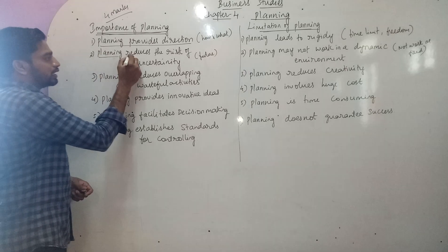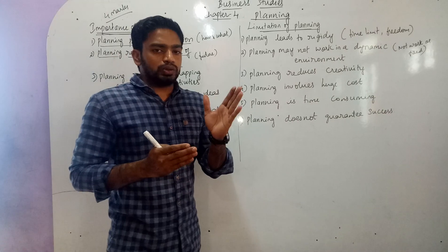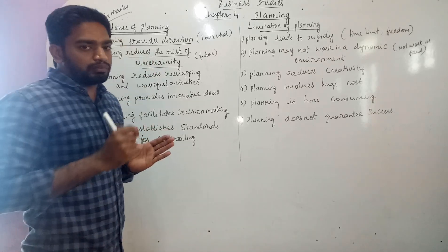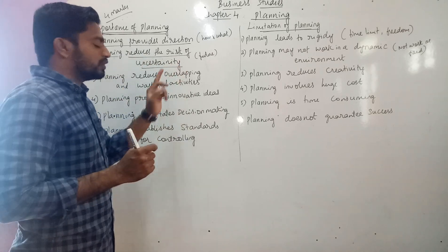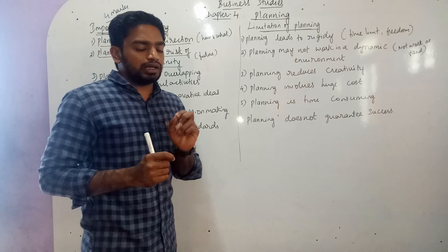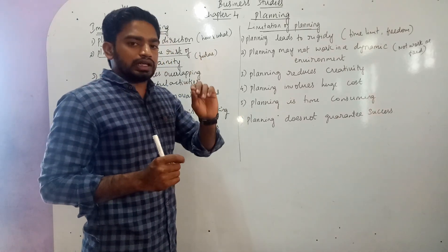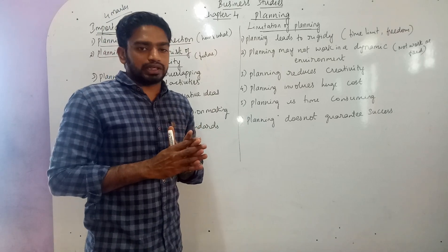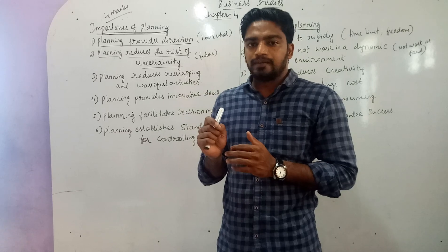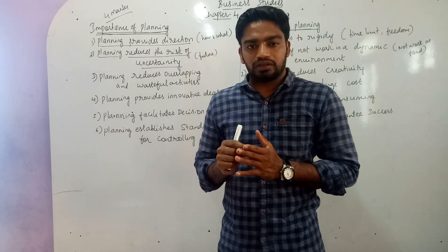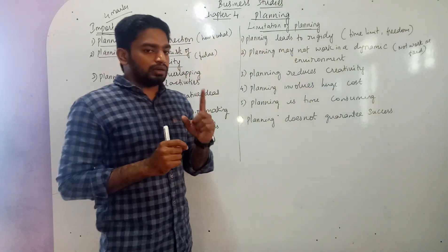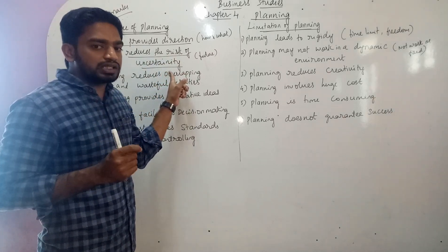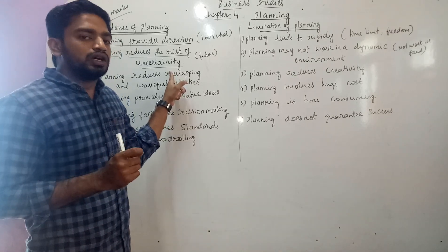Second point: planning reduces the risk of uncertainty. If we do planning, that plan always helps us to achieve the goals we have set for the future. Whatever activities we are performing according to the plan, we can conduct them in a smooth and easy manner. We make a plan for the future so that we do not face any problems or issues. Perfect planning reduces the risk in performing activities and achieving the goals of the organization.